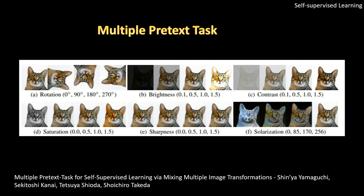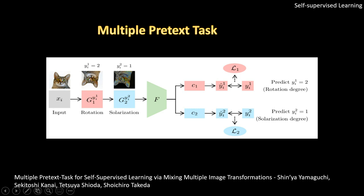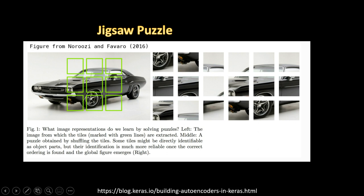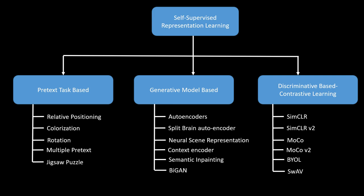Another approach uses multiple pretext tasks. Previously, approaches used only colorization, relative positioning, or rotation individually, but here the network is tasked with multiple objectives: in addition to rotation, it also predicts brightness, contrast, saturation, sharpness, and solarization. The network has a base model with branches for each task. Another popular task is jigsaw puzzle, where you take random patches, shuffle them, and the network must arrange them in correct order. These are all pretext task based self-supervised models.